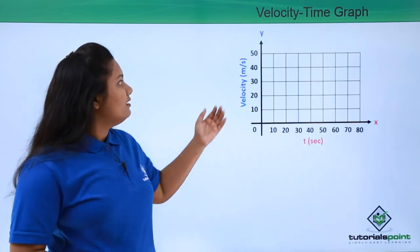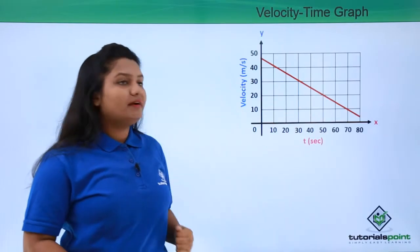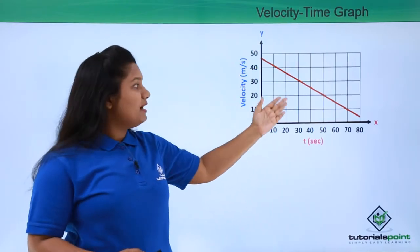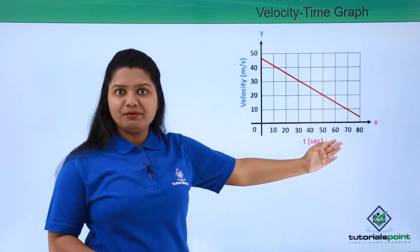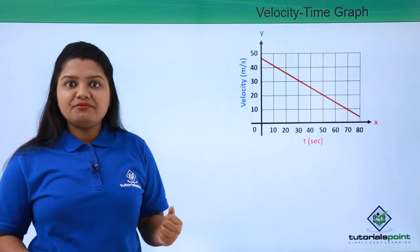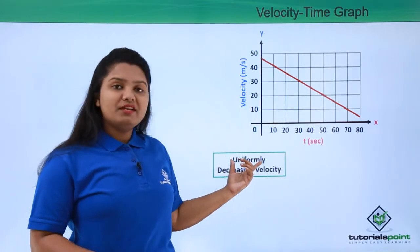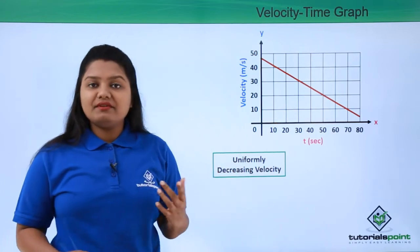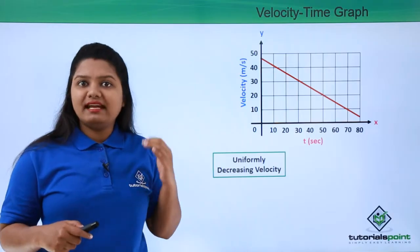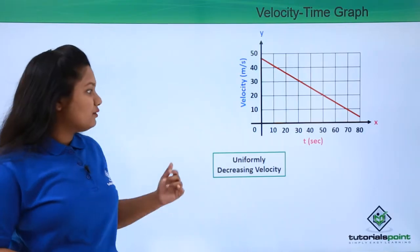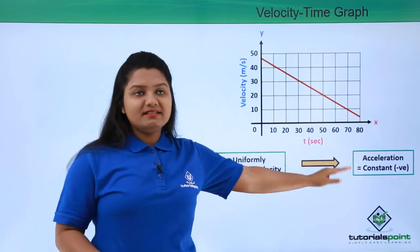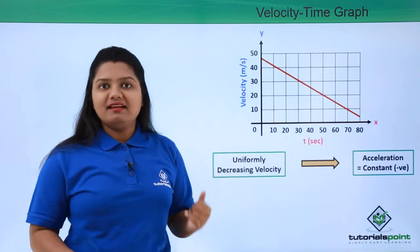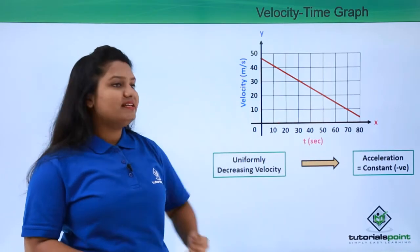Now let us infer what a velocity-time graph with a negative slope means. This kind of graph is again a straight line, but it has a negative slope, which means the body is moving with a uniformly decreasing velocity. Whenever there is a decrease in velocity, we have negative acceleration or retardation. So the acceleration is constant since it is a straight line, but it is negative since the slope is negative.